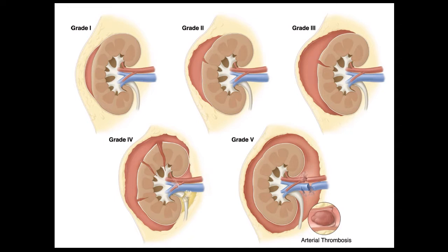Grade one injuries tend to be small contusions or subcapsular hematomas. Grade two lesions can be larger hematomas or lacerations less than one centimeter. Grade three are lacerations greater than one centimeter but do not involve the collecting system.